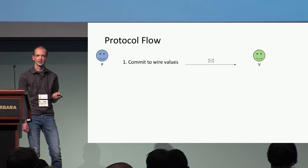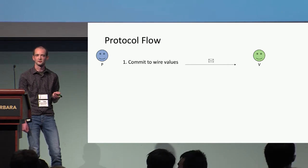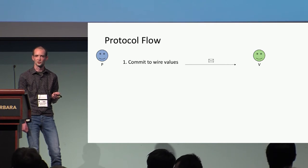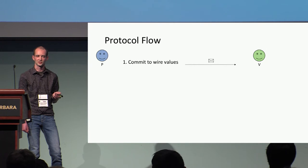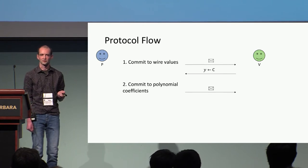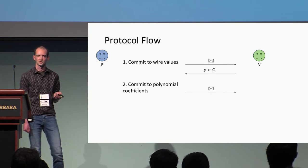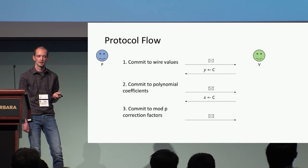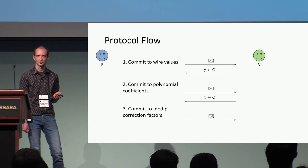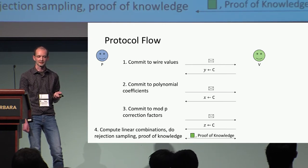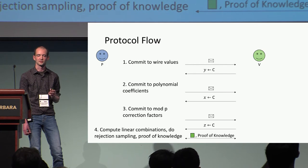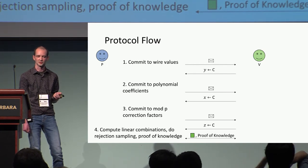Here's a quick overview of what our protocol looks like. In the first step, the prover commits to all of the wire values from the matrices and sends all the committed values to the verifier. After receiving a random challenge from the verifier, the prover commits to the coefficients of some polynomial used in the verifier's polynomial identity test. Then there's another step where the prover commits to some mod-p correction factors. Lastly, the prover computes linear combinations of the committed vectors, does some rejection sampling on the result, runs a proof of knowledge for all the commitments, and sends the results to the verifier.